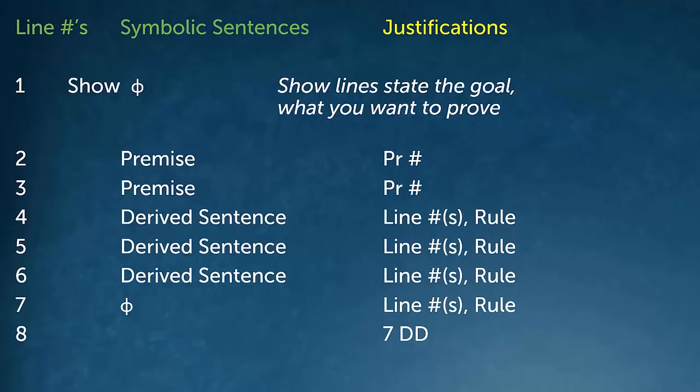In your justifications, you can write notes to yourself, but typically a justification line is where you explain how you arrived at the symbolic sentence on that line. You'll notice some other notation like PR number, line number, rule — and coding like DD. We'll get to all these things soon.